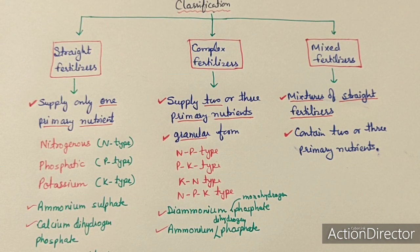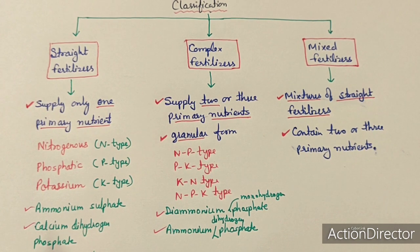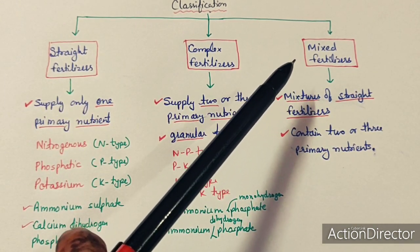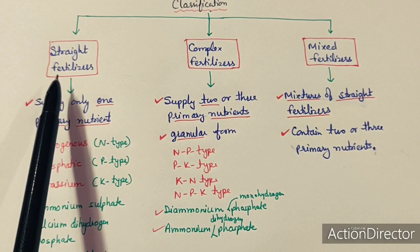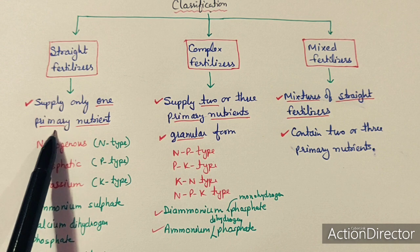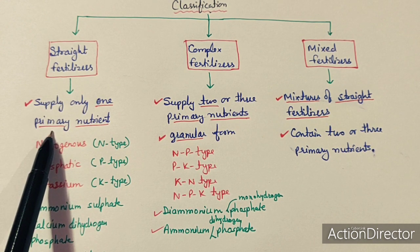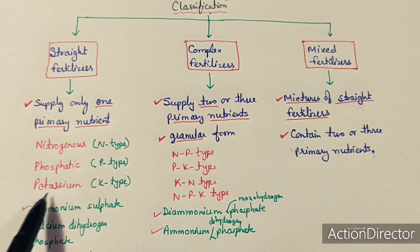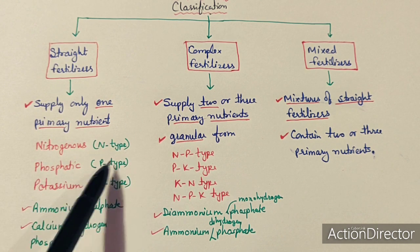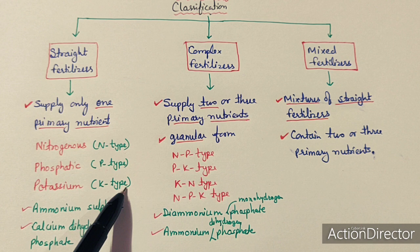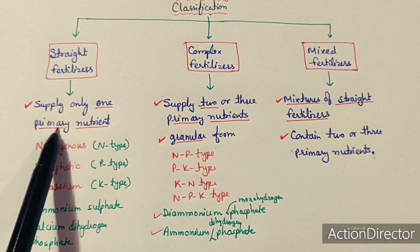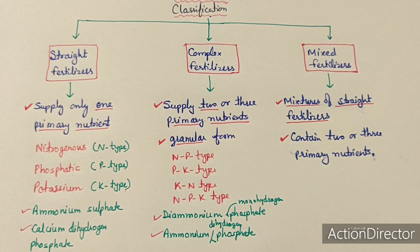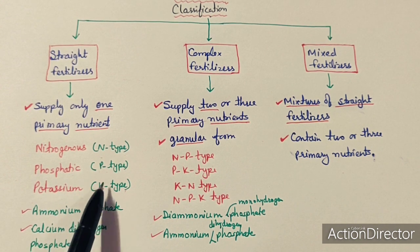Classification of fertilizers: fertilizers have three main classes — straight fertilizers, complex fertilizers, and mixed fertilizers. Straight fertilizers supply only one primary nutrient — nitrogenous types supply only nitrogen, phosphatic types supply only phosphorus, and potassic types supply only potassium. Examples: ammonium sulfate (nitrogen) and calcium dihydrogen phosphate (phosphorus).